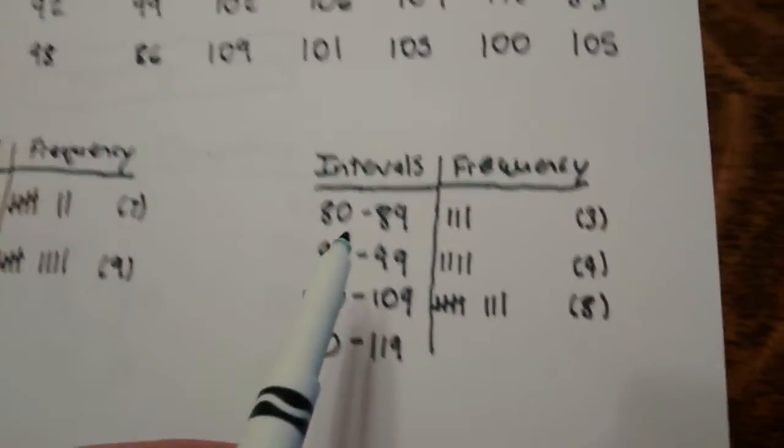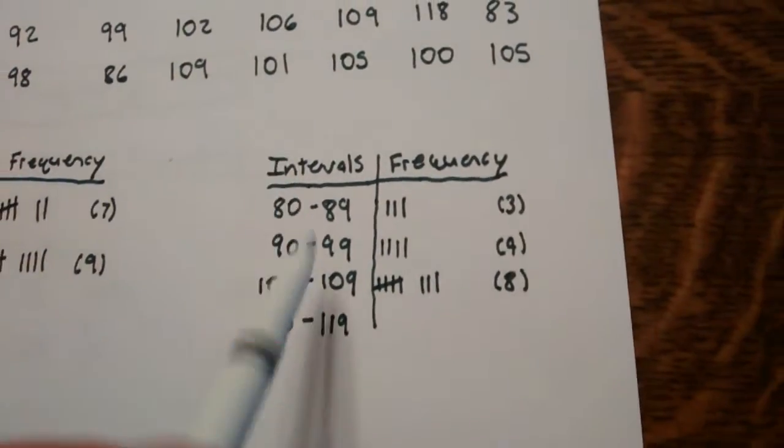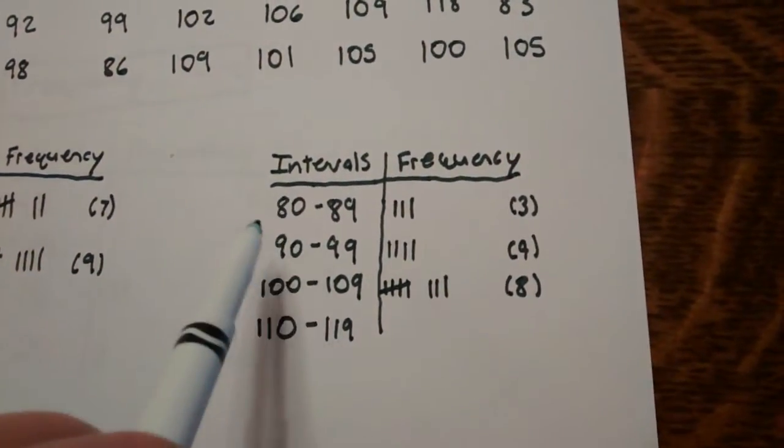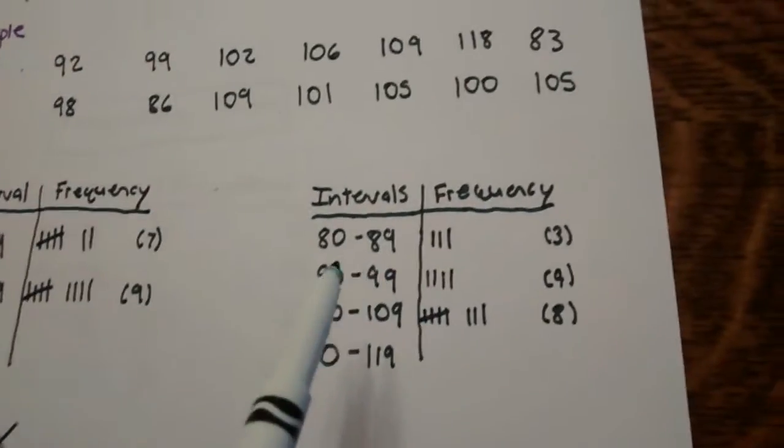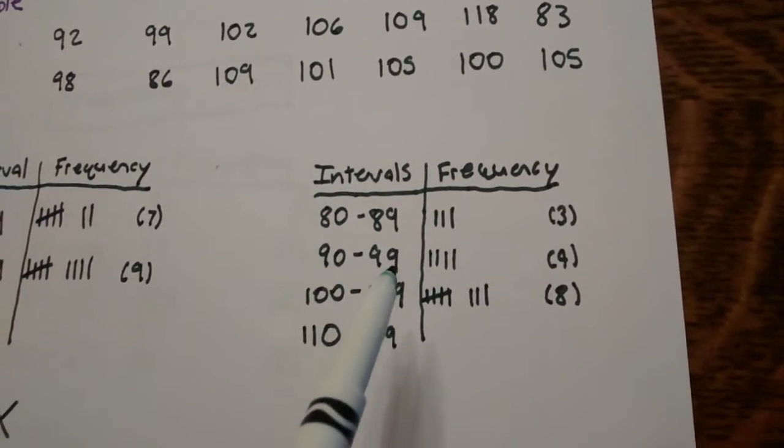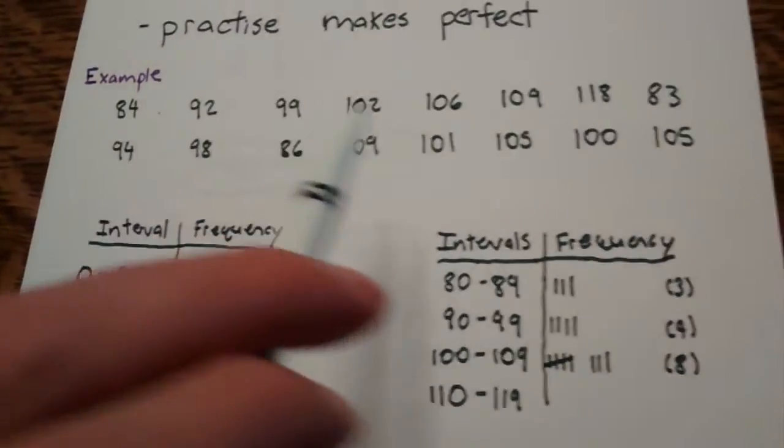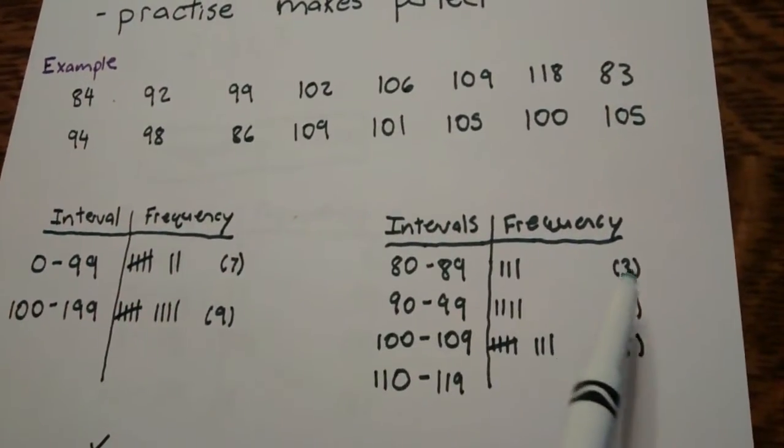What this needs is a more accurate interval table and here's what I mean by accurate. So I've taken this and made it more accurate. First off, I've changed the intervals. Instead of 100, I've made them by 10. So I did 80 to 89, 90 to 99 and so on. And then what I did was I counted the numbers that fit into each section.